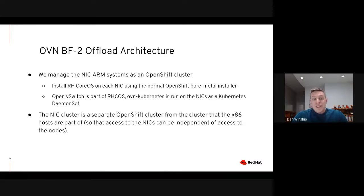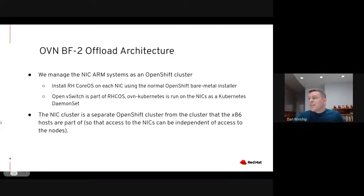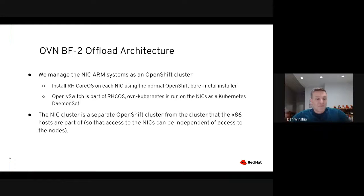We can install CoreOS onto each NIC using the normal OpenShift bare-metal installer, because in addition to the two high-speed ports, each BlueField also has an RJ45 management port, which lets you do all that management port type of stuff like IPMI. So you can get the card to netboot, install a new OS that way, do whatever you need. So we install RHCOS on the NIC — that includes OpenVSwitch and Kubelet. Later, we can run OVN Kubernetes as a daemon set and it should all work.